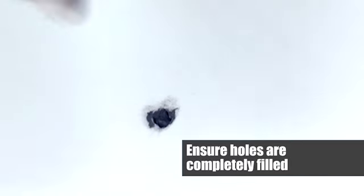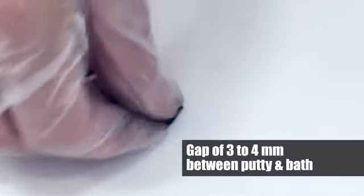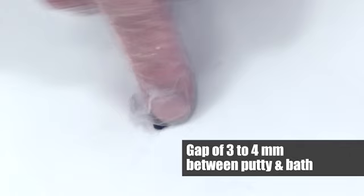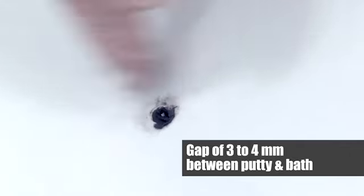Ensure holes or voids are completely filled. Always ensure that there is a minimum gap between the putty and the bath surface of three to four millimeters. If the putty has to be applied from the top of the bath surface, ensure to depress until the minimum gap is achieved.